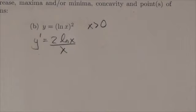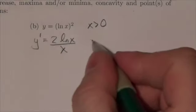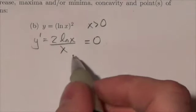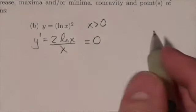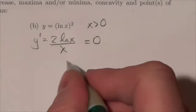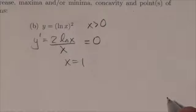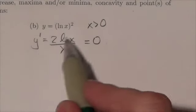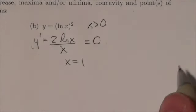But the critical numbers have to be in the domain of the function. And although this thing is undefined at 0, my domain is greater than 0. So 0 is not a critical number. So when I set this equal to 0 here, I'm really just looking at where the numerator goes to 0. And the numerator is going to go to 0 when x is equal to 1. That's what's going to force the natural log to go to 0.